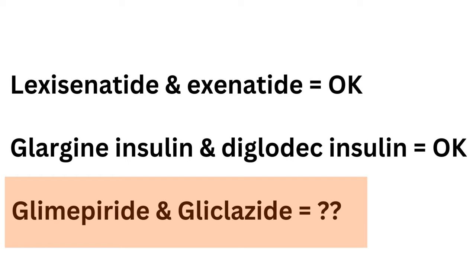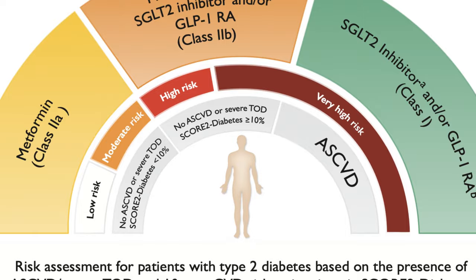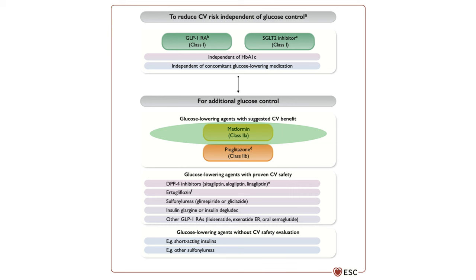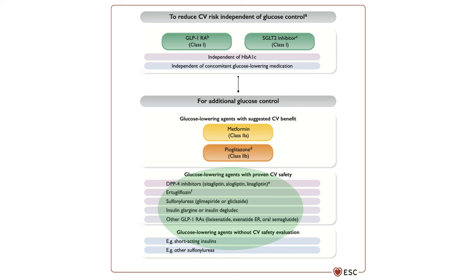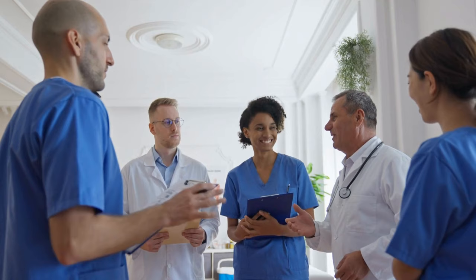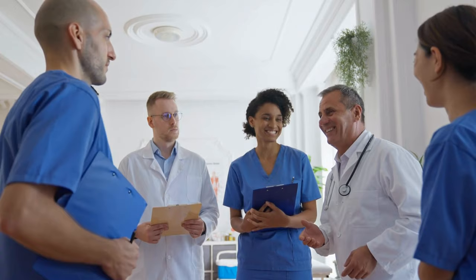To best address blood glucose control according to cardiology evidence and guidelines: first start with an SGLT2 inhibitor or GLP-1 receptor agonist. If more blood glucose control is needed, combine both agents. Then add metformin, followed by pioglitazone, then DPP-4 inhibitors, glimepiride or gliclazide, or insulin glargine or degludec. In patients with hemoglobin A1c more than 9% and extreme blood sugar elevation, endocrinologists must be involved to guide management.